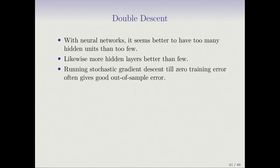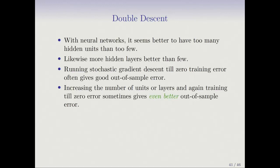Running stochastic gradient descent till zero training error often gives good out-of-sample error. In fact, in many of these networks, like image where the signal-to-noise ratio is high, they just run all the way till you get zero training error. The number of parameters in these networks are enormous. Increasing the number of units or layers and again training till zero error sometimes gives even better out-of-sample error. So all this lays out the fact that neural networks seem reluctant to overfit, and you could put as many parameters as you like in the model.